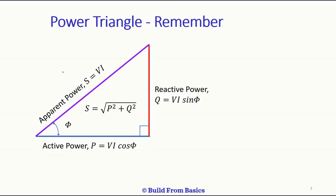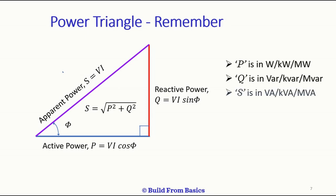Active and reactive power together make up the apparent power. Active power is the product of RMS voltage, RMS current, and the cosine of the angle between them; its unit is watts, kilowatts, or megawatts. Reactive power is the product of RMS voltage, RMS current, and the sine of the angle between voltage and current; its unit is VAR, kVAR, or MVAR.